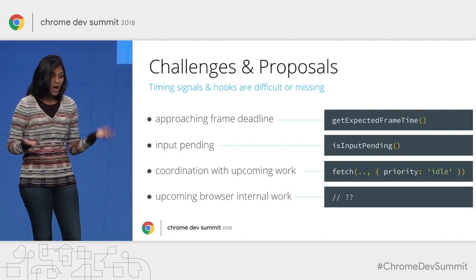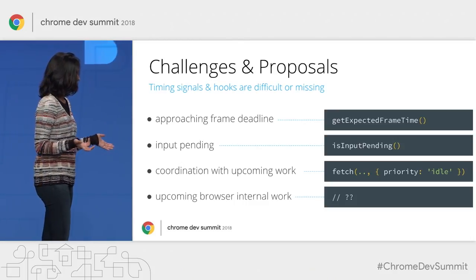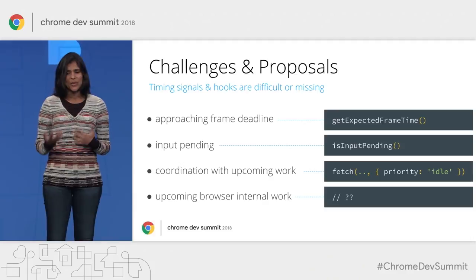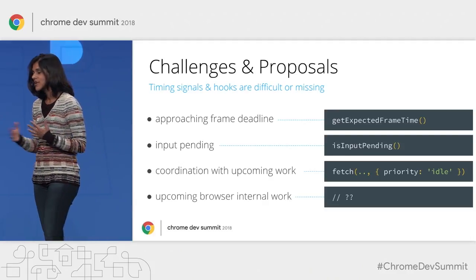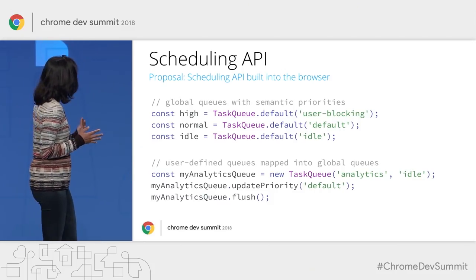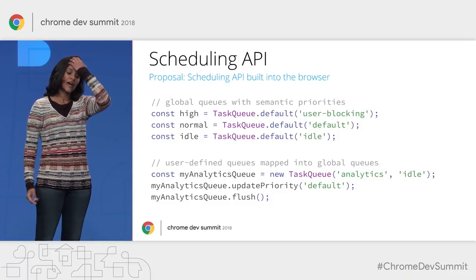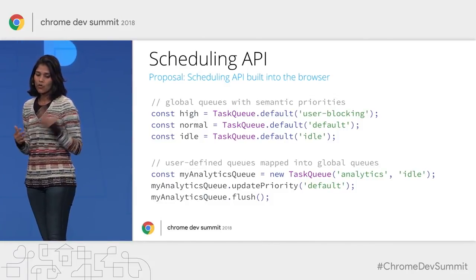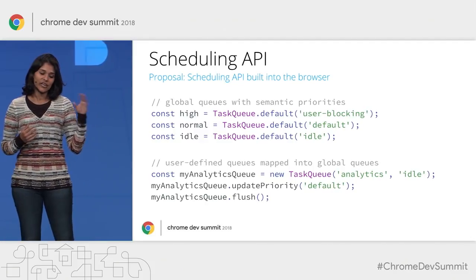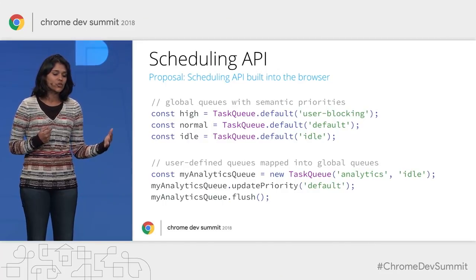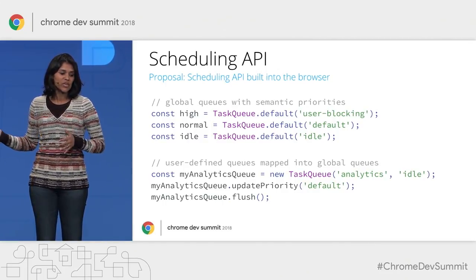While it is possible to build a scheduling system in JavaScript, they suffer from gaps, primarily because they do not have enough control on signals to properly control scheduling. This is a very early sketch of what an API might look like. The key thing here is a set of global task queues targeting each priority level, which is really simple and straightforward compared to using a myriad of different APIs.